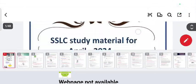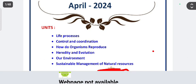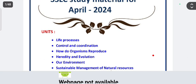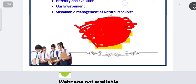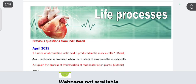This is Part C, covering biology, physics, and chemistry. In biology, you have seven units: life processes, control and coordination, how do organisms reproduce, heredity and evolution, our environment, and sustainable management of natural resources. These are the topics covered. First, we come to the Life Processes chapter.